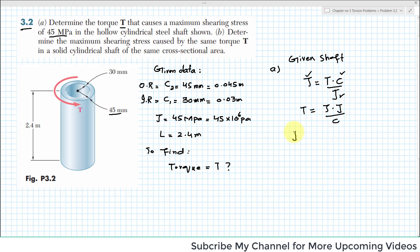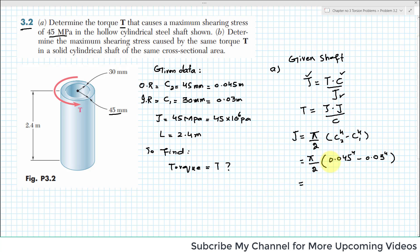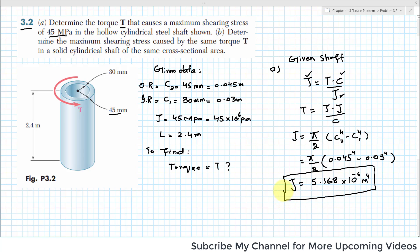Let's calculate J for this hollow circular shaft. We know that J for a hollow circular shaft is equal to π/2 × (C2⁴ − C1⁴). Putting in values: π is 3.1417, C2 is 0.045 m and C1 is 0.03 m. When you calculate this, the value comes out to be 5.168 × 10⁻⁶ m⁴. This is the polar moment of inertia for this hollow steel shaft.